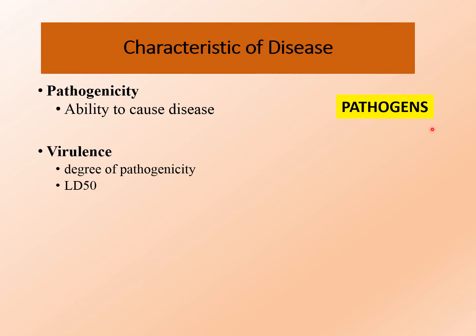Microbes which cause disease are called pathogens. There are two terms to define the characteristics of a pathogen. First is pathogenicity — the ability of microbes to cause disease. Organisms which can cause disease are called pathogens; those which cannot are called non-pathogens. Another term is virulence, which refers to the severity of the disease caused by microbes, also described as the degree of pathogenicity. Virulence is generally measured in terms of lethal dose 50 (LD50) — the amount of microbes required to kill 50% of the organisms in an experimental setup.